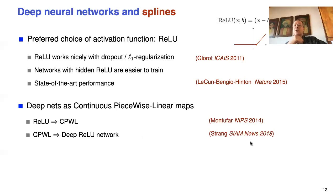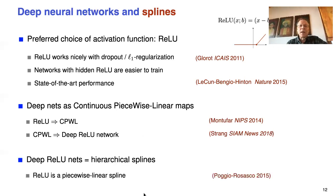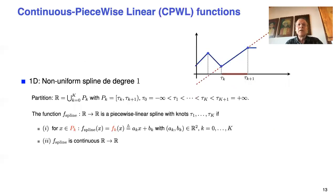There's a nice paper from 2014 on this, and a very good paper by Gil Strang also makes the connection between deep neural networks and continuous piecewise linear mappings. Poggio and Rosasco at MIT also early on recognized that this has the structure of splines, and that you could really look at a deep neural network as a hierarchical spline. Let me make this a little more explicit.